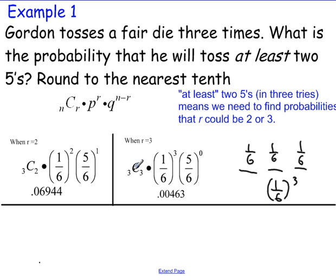It's the same as what you have here because 3C3 is 1 and 5 over 6 to the 0 is also 1. So it's just 1 out of 6 to the third. But, you know, you could just use the formula if you feel more comfortable that way.